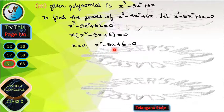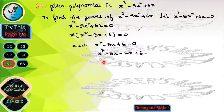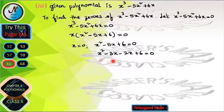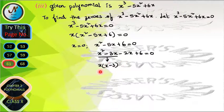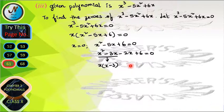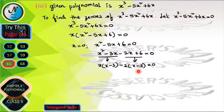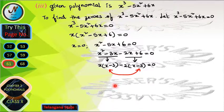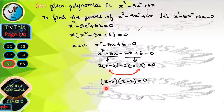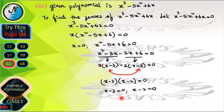To factorize x² − 5x + 6, we split the middle term −5x as −3x − 2x, giving x² − 3x − 2x + 6 = 0. Taking x common from the first two terms: x(x − 3), and −2 common from the last two terms: −2(x − 3). Since (x − 3) is common, we factor to get (x − 3)(x − 2) = 0.